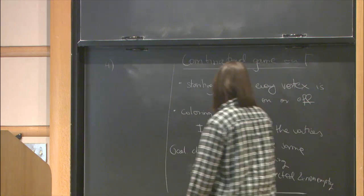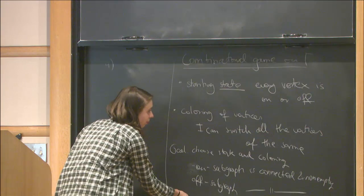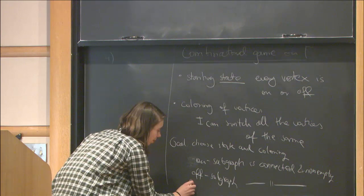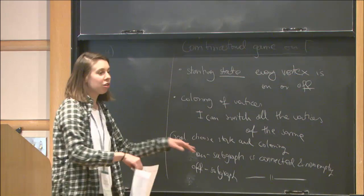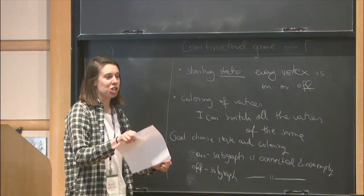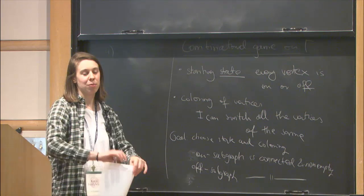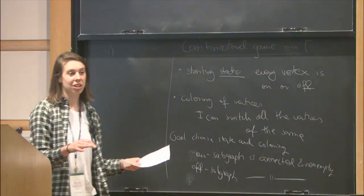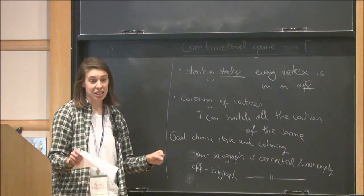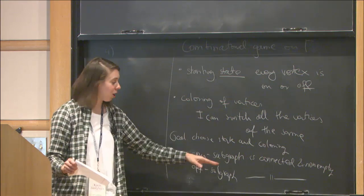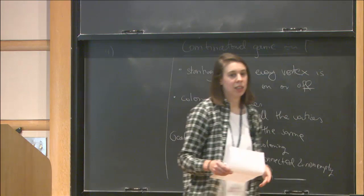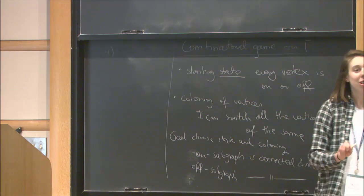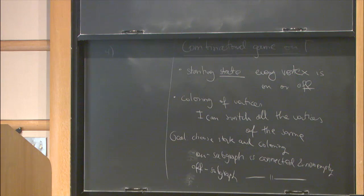And we want this to hold for all states reachable by switching colors — meaning for any collection of colors I choose to switch simultaneously, both the on-subgraph and off-subgraph remain connected and non-empty. I'm asking whether there exists a state and coloring with this property.